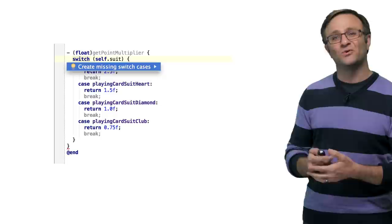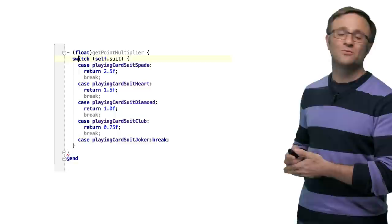By the way, even better, if you're using app code, hitting Alt Enter will give you this create missing switch cases statement, which will automatically spec out those missing code branches for you. That's pretty nice, huh?